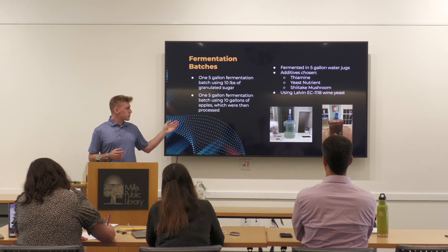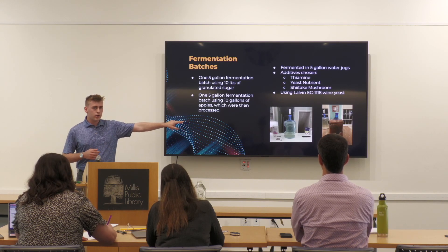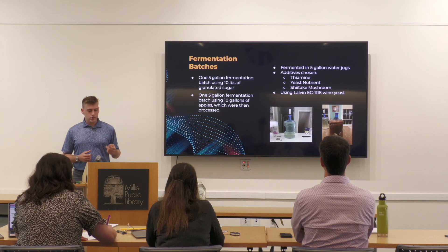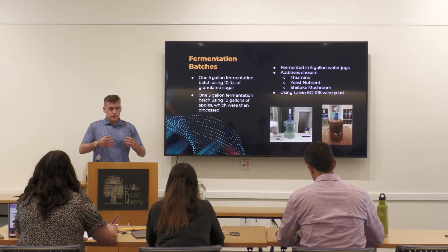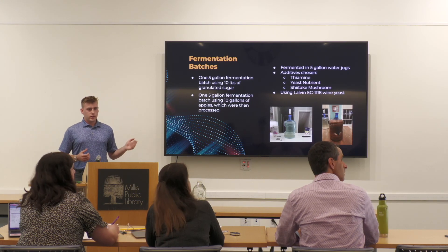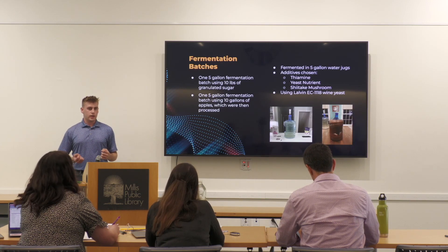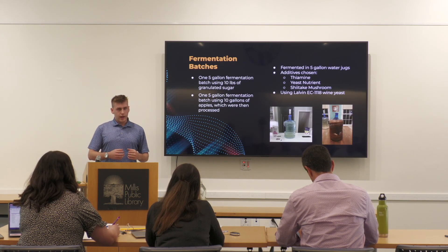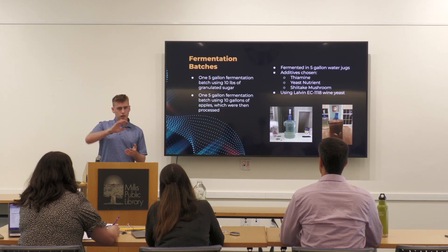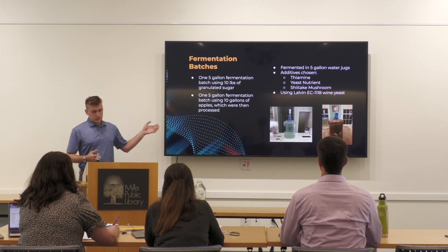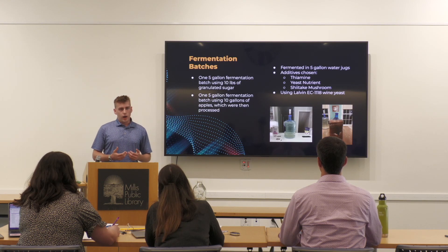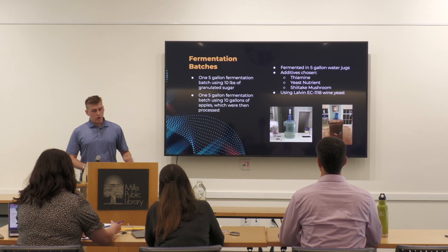I fermented in five-gallon water jugs with airlocks added, as you can see in the pictures. The additives I chose were thiamine, yeast nutrient, and shiitake mushroom. Thiamine helps give the yeast the proteins it needs to break apart glucose. Yeast nutrient adds urea and diammonium nitrate, giving the yeast nitrogen as a supplement. Shiitake mushroom adds ergosterols, which yeast use to build their cell membrane, helping the yeast withstand higher alcohol percentages.